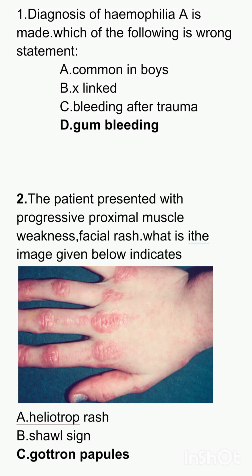This is the November 2022 recall, Part 1. First question: A diagnosis of hemophilia A is given. Which of the following is a wrong statement? Options are: common in boys, X-linked, bleeding after trauma, gum bleeding. The answer here is gum bleeding.